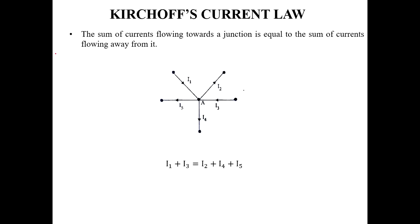Kirchhoff's Current Law (KCL): the sum of incoming currents equals the sum of outgoing currents. For example, if incoming currents are I1 and I3, and outgoing currents are I2, I4, and I5, then I1 plus I3 equals I2 plus I4 plus I5.